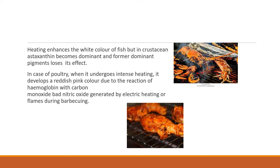Heating enhances the light color of fish by increasing opacity, but this is not a dramatic change. For different aquatic animals the change may vary. In poultry, when it is subjected to intense heat during preparation such as barbecuing, it develops a reddish-pink color. This is the result of hemoglobin reacting with carbon monoxide and nitric oxide, which are generated by an electric heating element or flames.